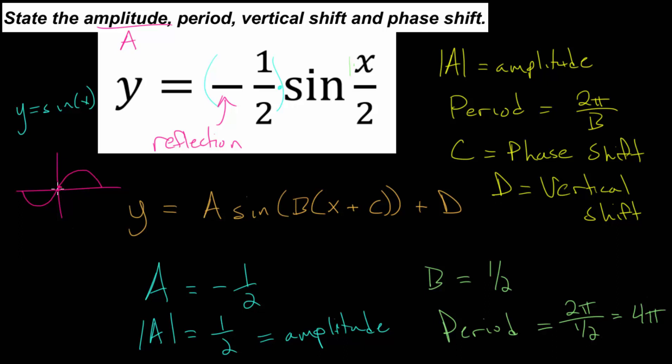Essentially, compared to our parent function, it will just go twice as far in its oscillation. And notice that we're not adding anything to our input. We essentially have plus 0 here. Or in other words, we do not have a c value. So we can say c is 0.